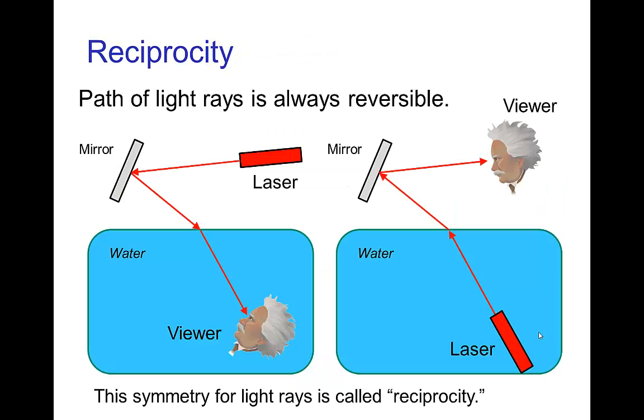Now, a fundamental principle in optics is that in geometric optics, the path of light rays is always reversible. And what that means is, if we set up a laser shining into a mirror which then the light passes underwater and there's a viewer, if we trace that light ray,